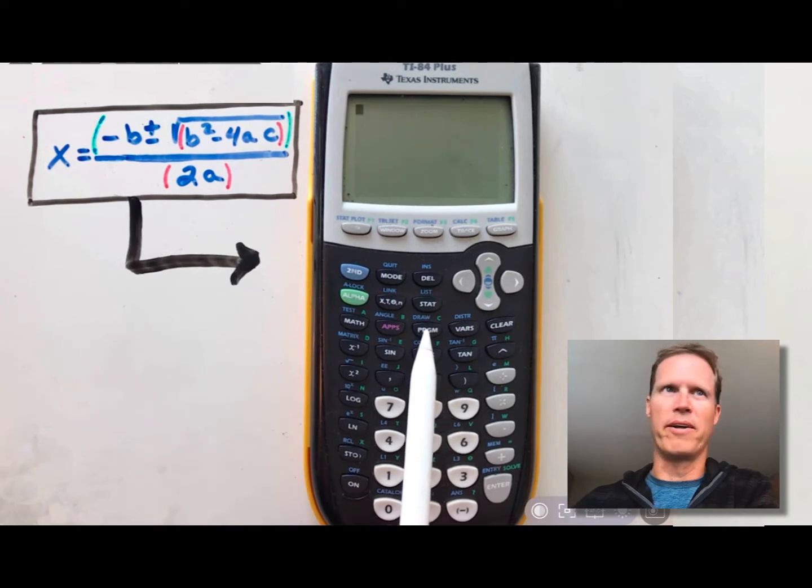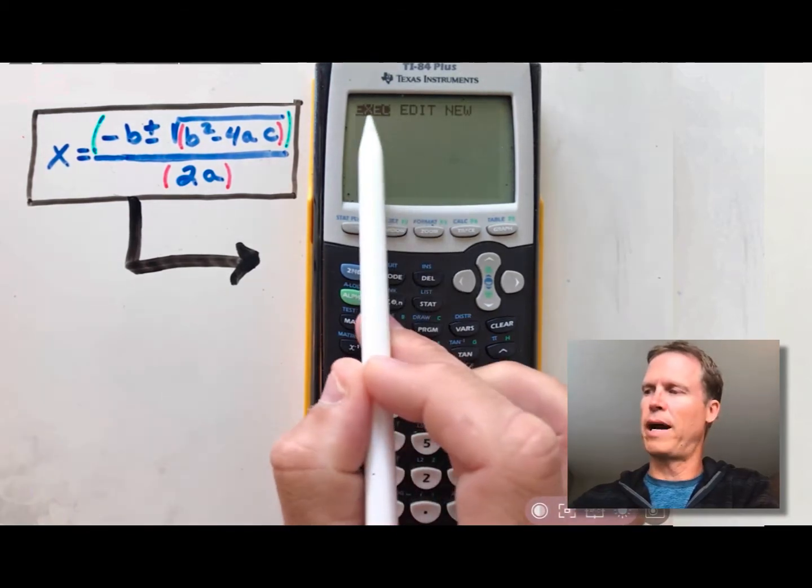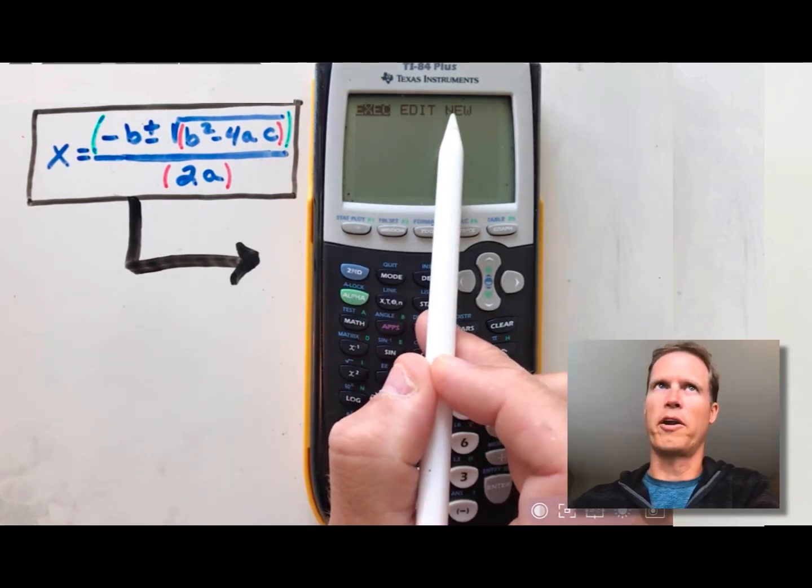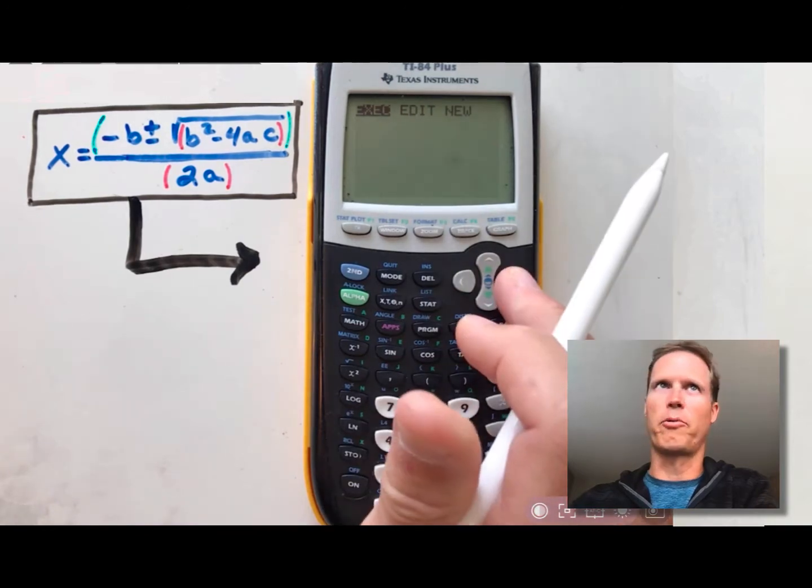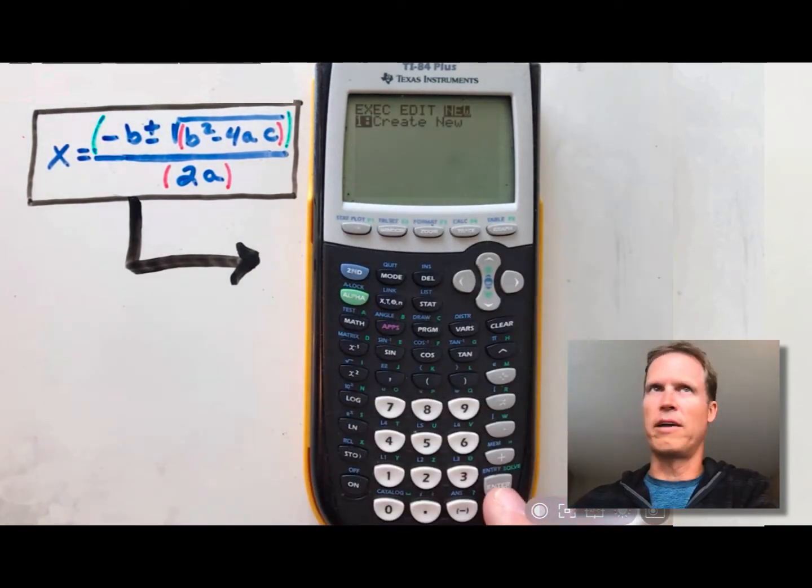Here we go. So the first thing you want to do is press the program button. You'll notice there are three options across the top of your screen. You want to choose the option for new, so press the right arrow twice, and then you'll notice it says create new, so press enter.